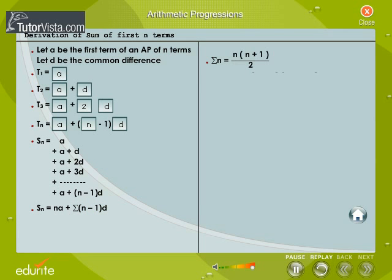We know that sigma n that is the sum of the first n natural numbers is equal to n into n plus 1 by 2.